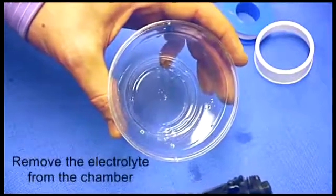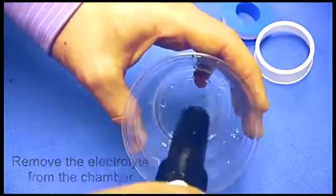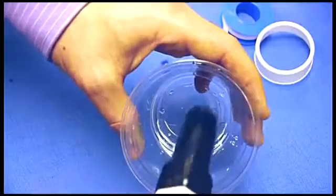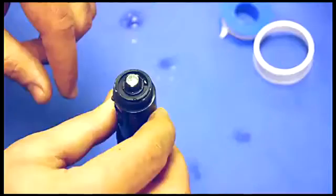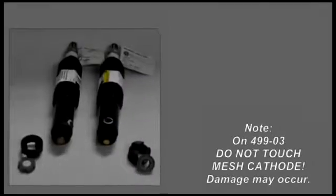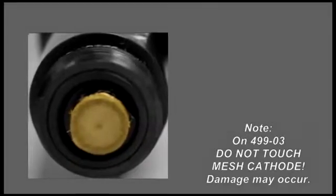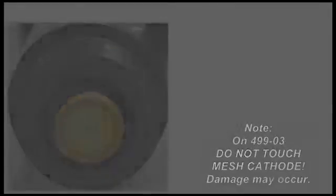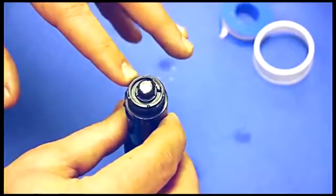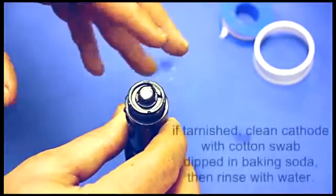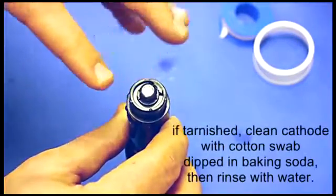Then you want to dump out the excess amount of electrolyte solution that's still in the sensor. Then you need to inspect the cathode. If it's tarnished, you just need to clean it with a cotton tip swab touched with baking soda and clean it off.